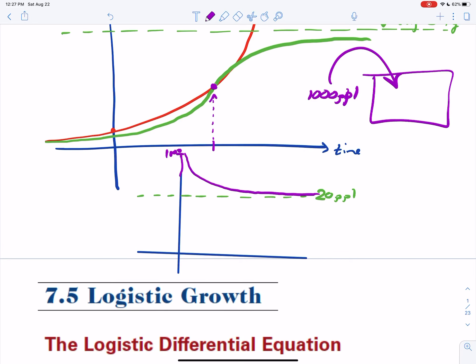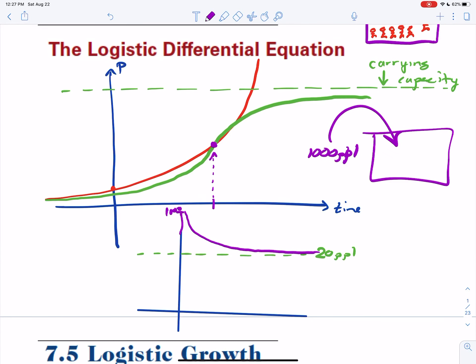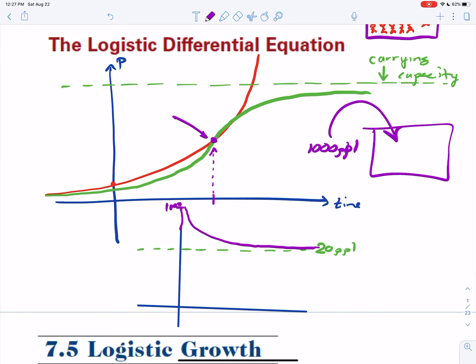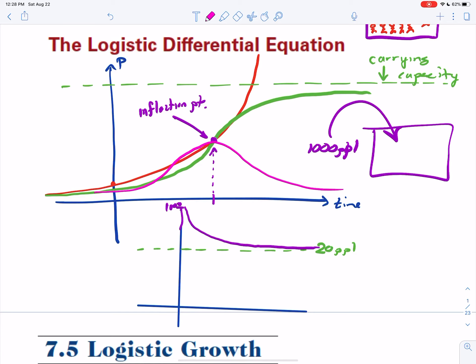That point right there — where concavity changes, where the graph goes from concave up to concave down — do you remember what that point is called? That is called your point of inflection, pretty much when your second derivative is equal to zero. If you were to graph the derivative of that green function, it looks like a curve where the maximum is at the inflection point.